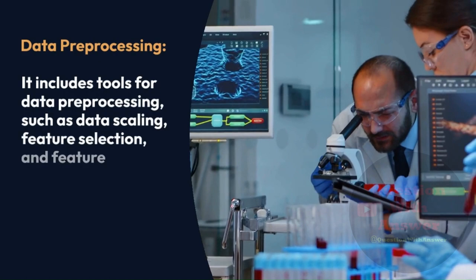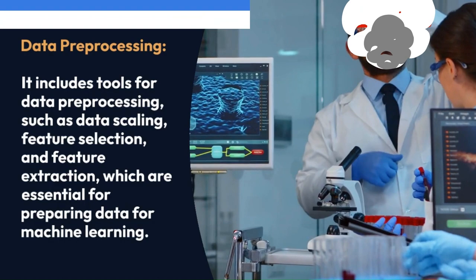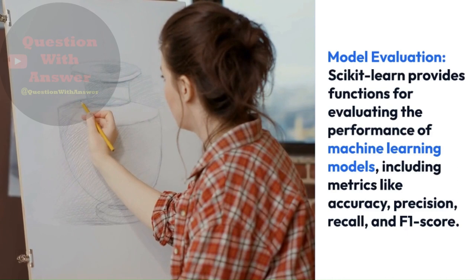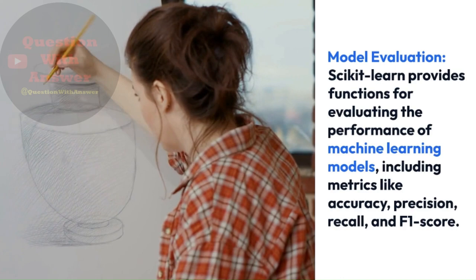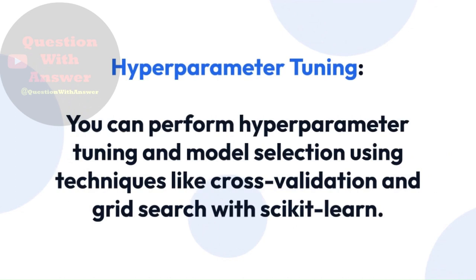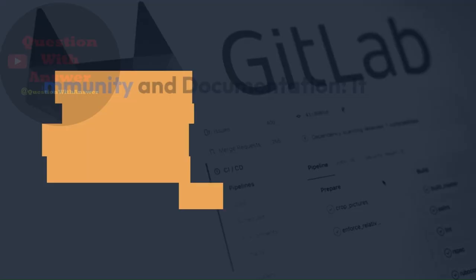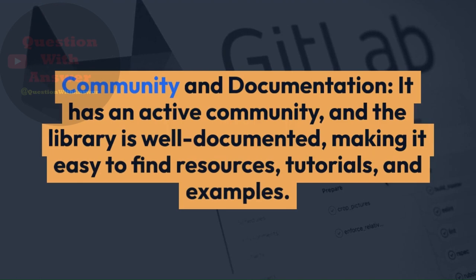Data preprocessing: Scikit-Learn includes tools for data preprocessing, such as data scaling, feature selection, and feature extraction, which are essential for preparing data for machine learning. Model Evaluation: Scikit-Learn provides functions for evaluating the performance of machine learning models, including metrics like accuracy, precision, recall, and F1 score. Hyperparameter Tuning: you can perform hyperparameter tuning and model selection using techniques like cross-validation and grid search. Scikit-Learn seamlessly integrates with NumPy for efficient numerical operations and SciPy for additional scientific computing capabilities. It has an active community and is well-documented, making it easy to find resources, tutorials, and examples.